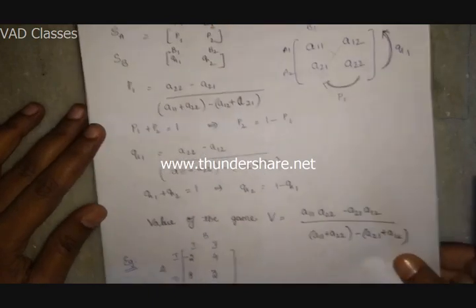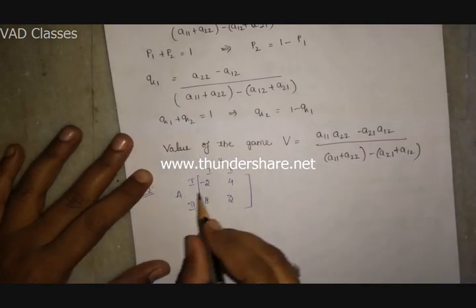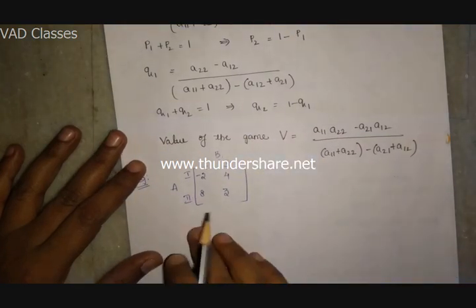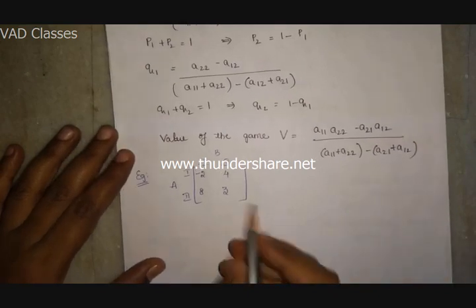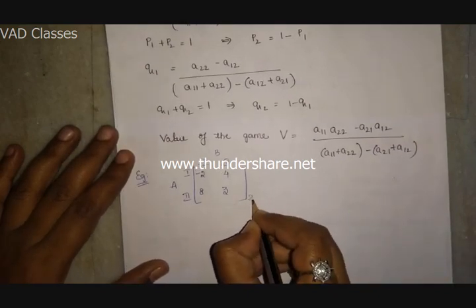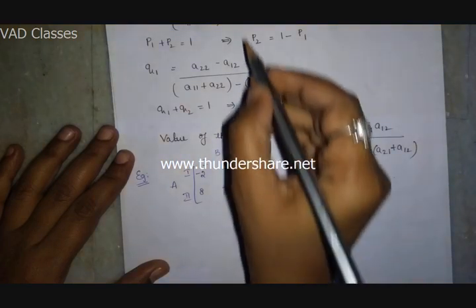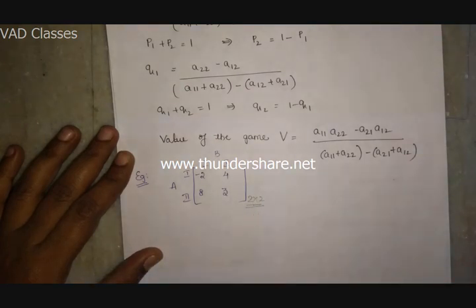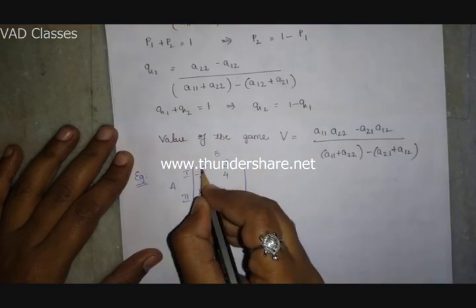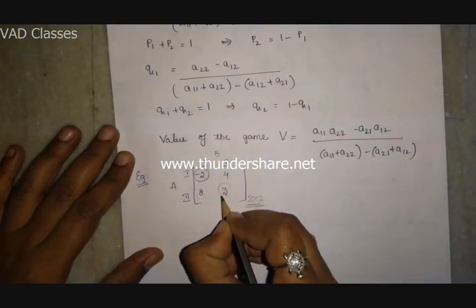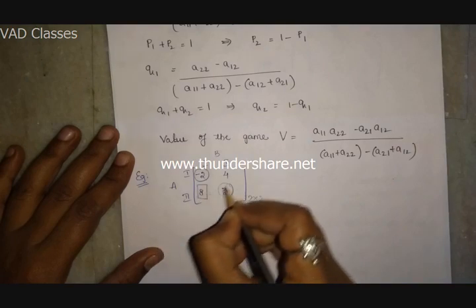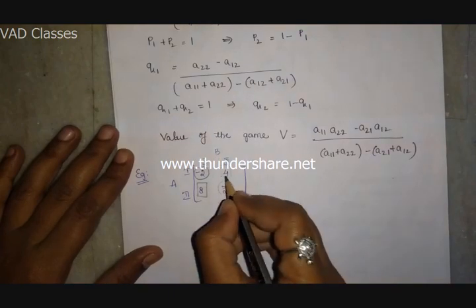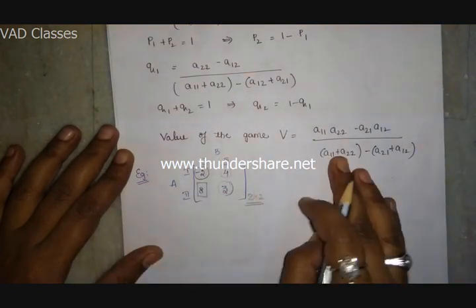Let's start a problem. First check for a saddle point. For the 2x2 matrix, find row minimums and column maximums. The row minimum for row one is minus two and for row two is three. The column maximum for column one is eight and for column two is four. Since there is no common intersection of circle and square, the game does not have a saddle point.